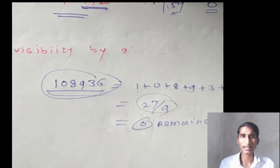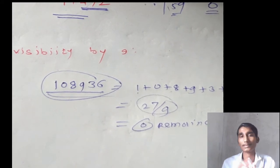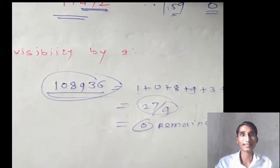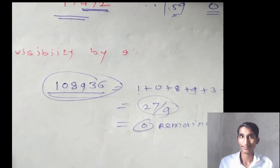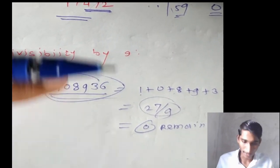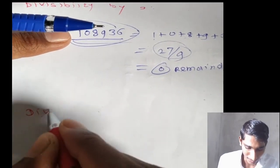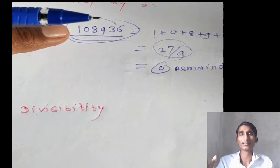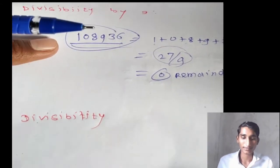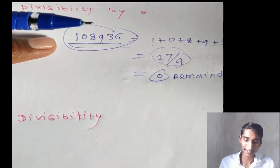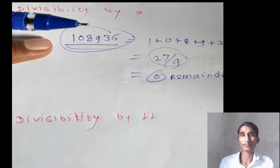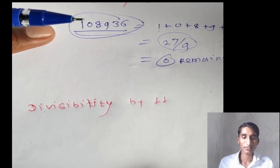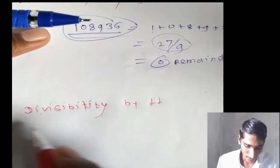Divisibility by 10 is very simple — when the unit digit is 0, the number is divisible by 10. The critical and tricky concept is divisibility by 11. Many of us don't know this rule. We typically only study 3 to 4 divisibility test cases and not more than that. So I'm here with all cases including divisibility by 11.